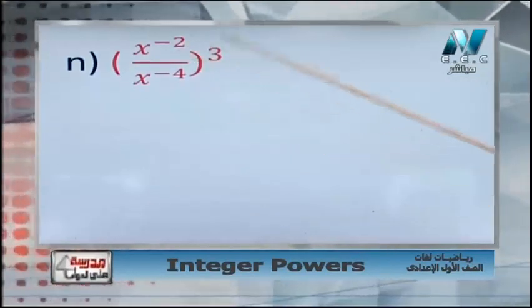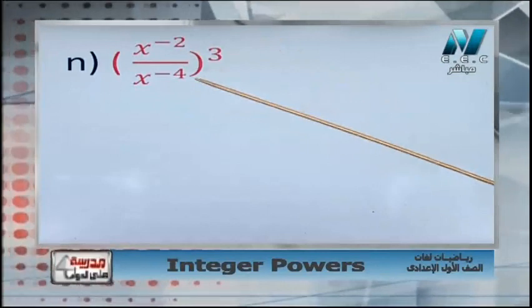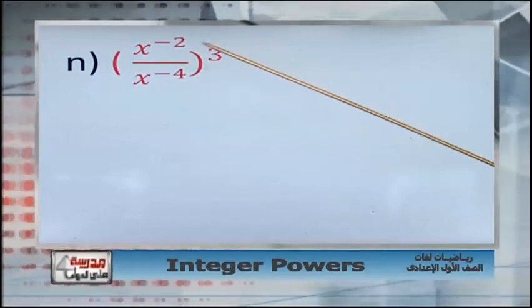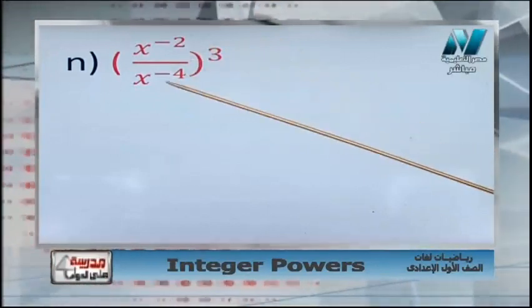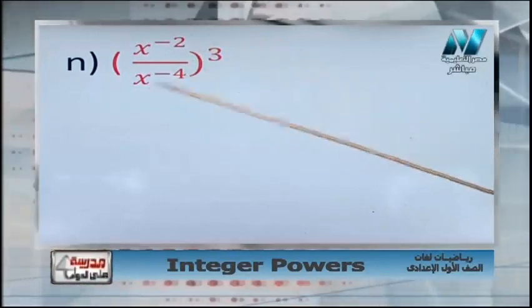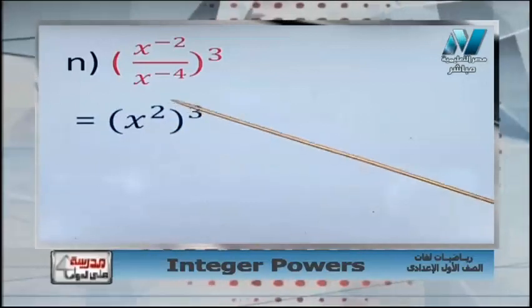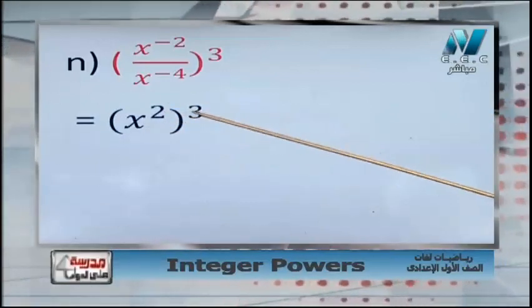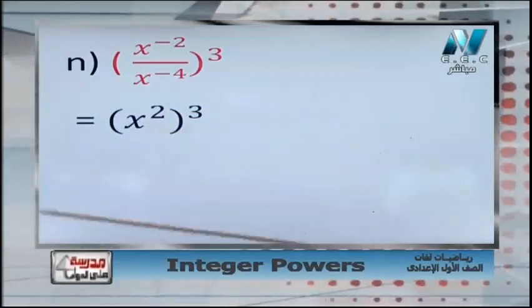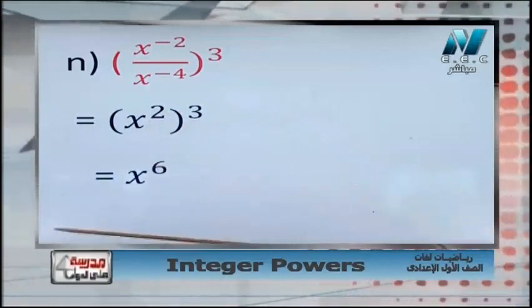Another mixed example: x power negative 2 over x power negative 4, all to the power 3. Dividing same base — subtract the powers: negative 2 minus negative 4 equals negative 2 plus 4 equals 2. So we have x power 2, all to the power 3. Power of the power: 2 times 3 equals 6. Answer: x power 6.